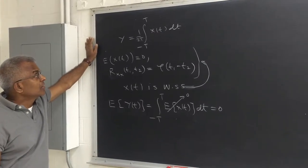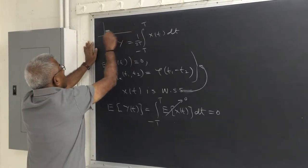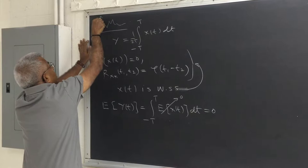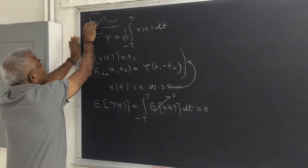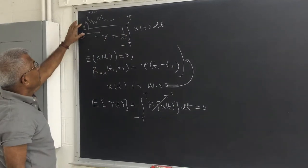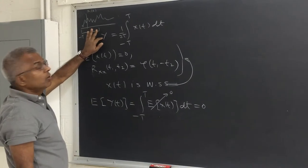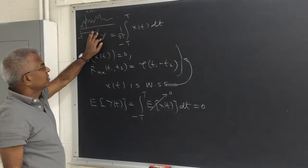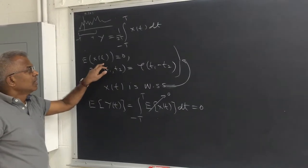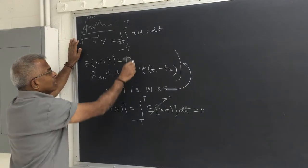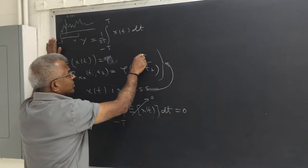So this is a simple problem. X of t is a stochastic process. We take a window from minus t to t and essentially compute the average value, and you get one number y. So y is a random variable, and we want to find out its mean and variance. X of t is given to be a wide-sense stationary stochastic process because the mean is a constant and the autocorrelation function only depends on t1 minus t2, which we call τ.